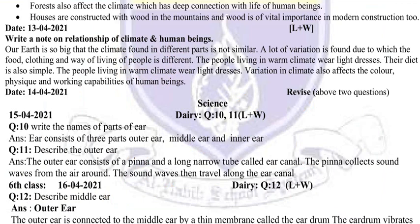The next question is: describe the outer ear. About the outer ear construction and working — the outer ear consists of a pinna. Pinna is scientifically a name. The outer ear also consists of a long narrow tube called the ear canal. The pinna collects the sound waves from the air around it.